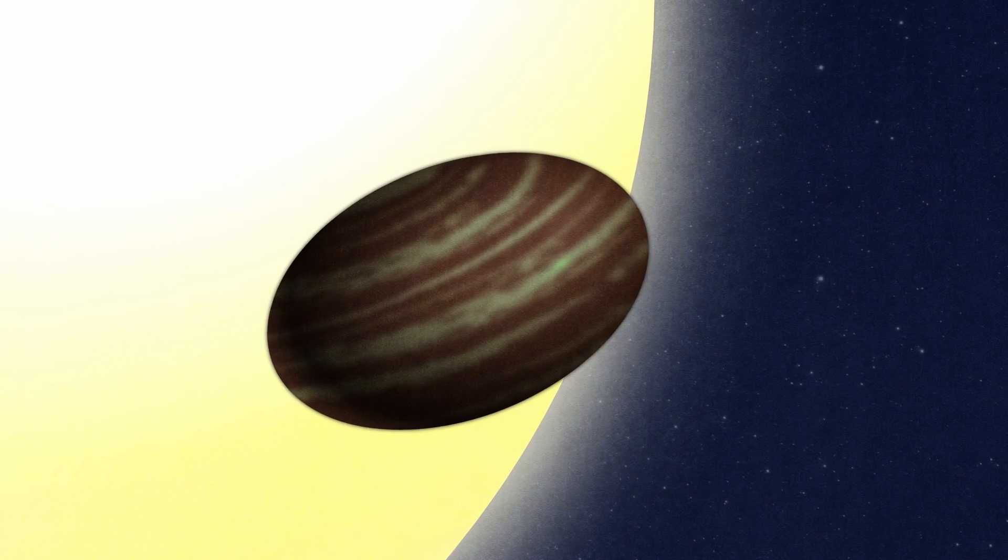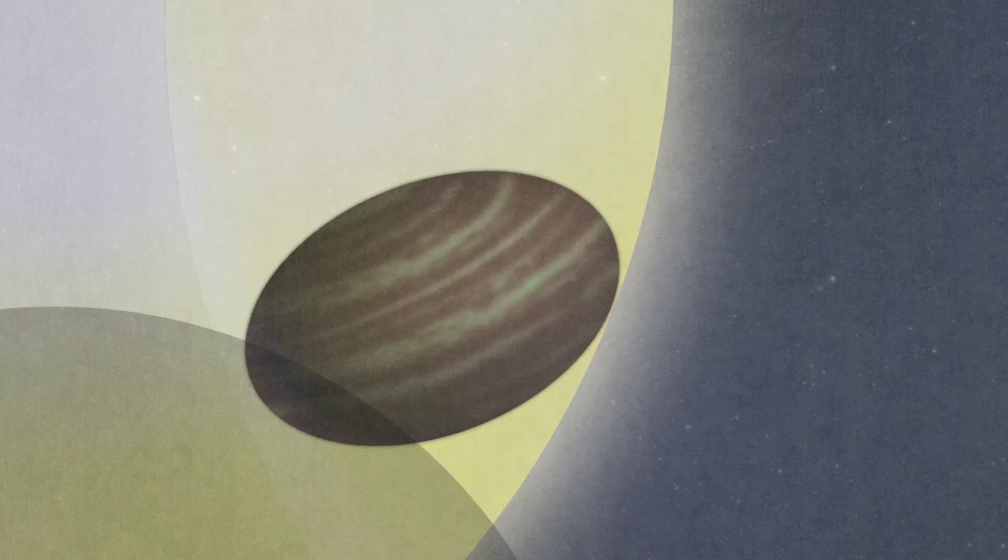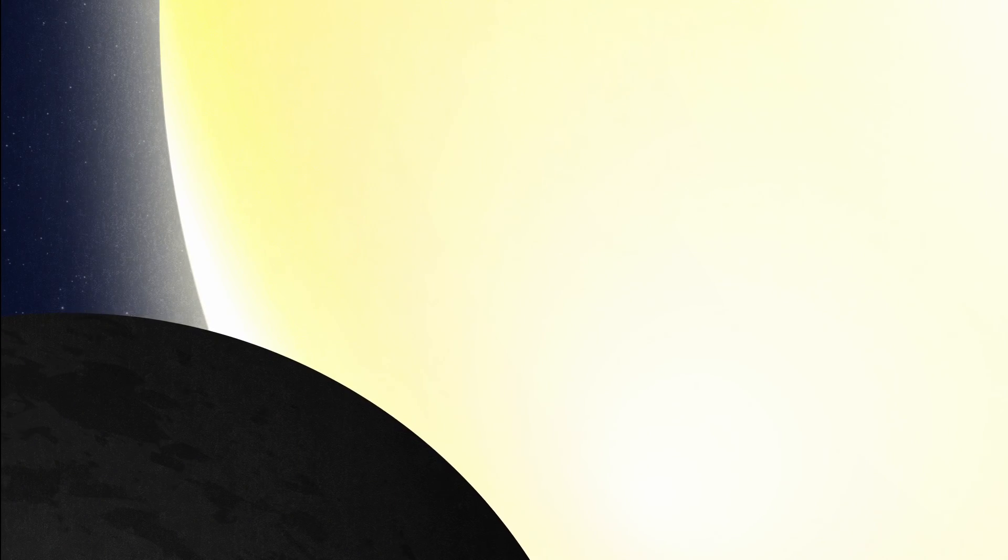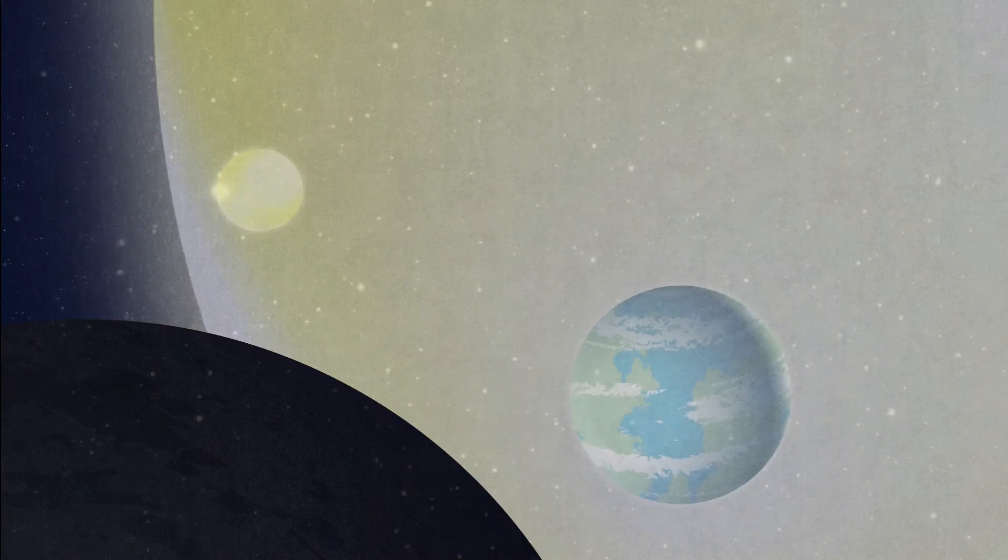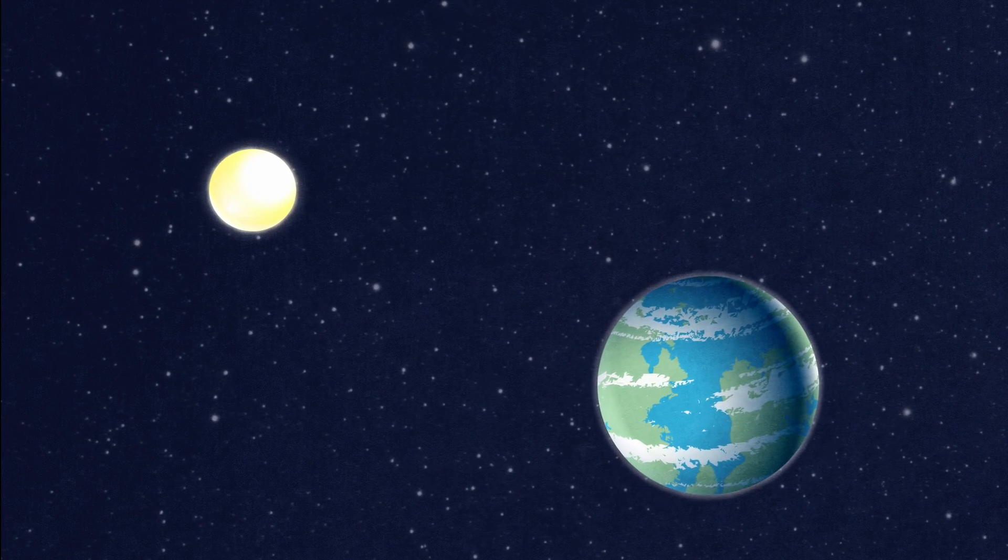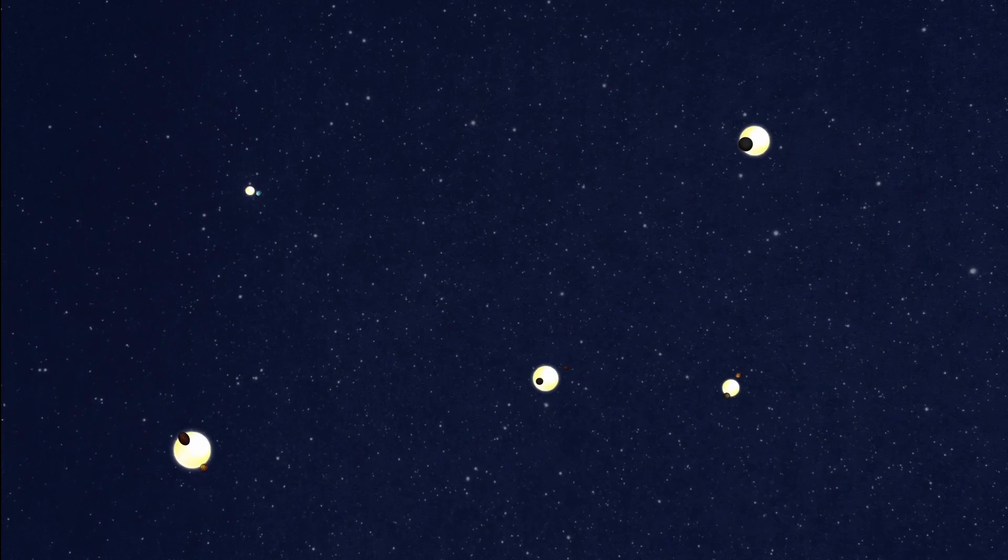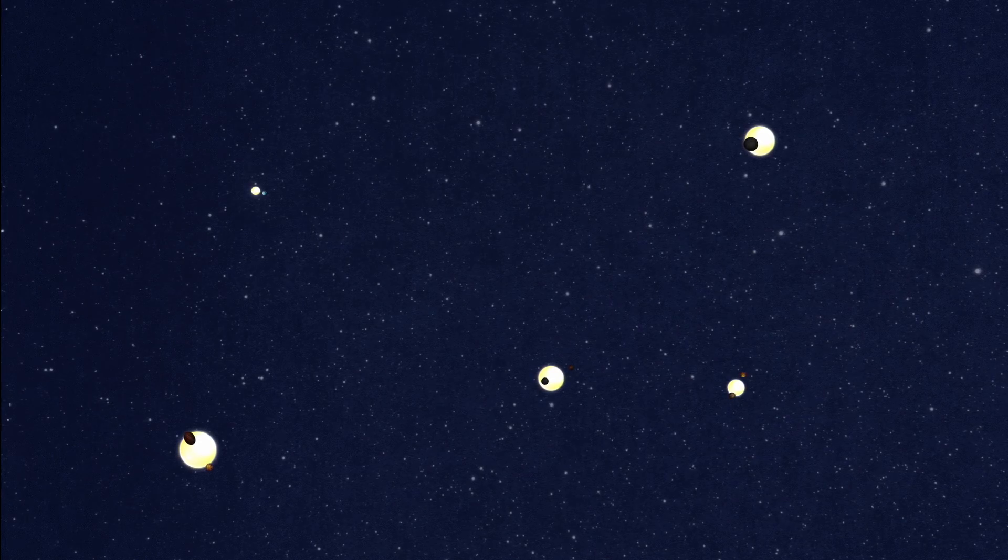A gigantic ball of gas hugging so close to its star it looks like an egg. A world that absorbs so much light it's darker than coal. A wet, rocky body just at the right distance a form of life might call it home. These are just some of the many planets known to orbit stars other than our Sun.